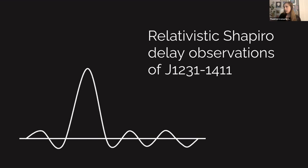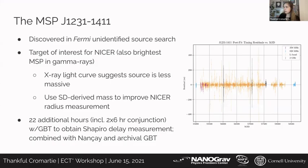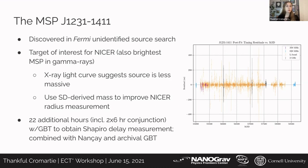To end, I'm going to talk about Shapiro delay observations of one more source — J1231-1411 — which is not a NANOGrav pulsar but is of particular interest to NICER. J1231-1411 is the brightest gamma-ray millisecond pulsar. The X-ray light curve suggests it might be a less massive source. The goal is, much like J0740, to use Shapiro-delay-derived masses to improve NICER's ability to measure neutron star radii. We combined 22 additional hours of supplemental observations over conjunction with lots of historical NANOSS data and archival GBT data.